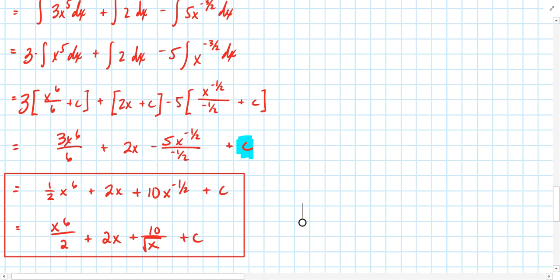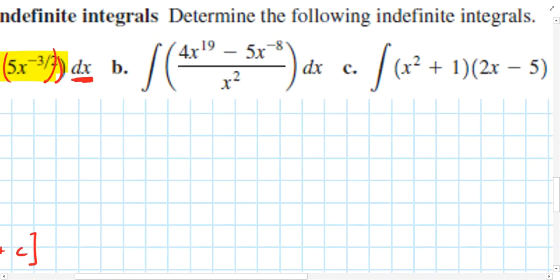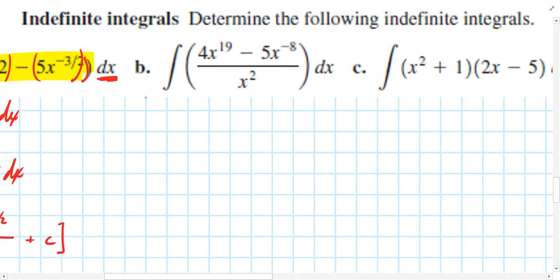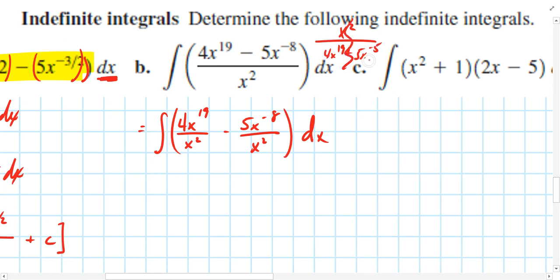For example B, recall that when there's a common denominator, we can split a fraction into separate terms. So the antiderivative of (4x¹⁹ − 5x^(−8))/x² can be split into the antiderivative of 4x¹⁹/x² minus the antiderivative of 5x^(−8)/x². Note: a common numerator cannot be split the same way — that's not a valid operation.